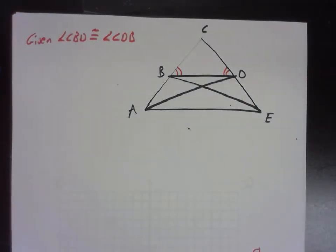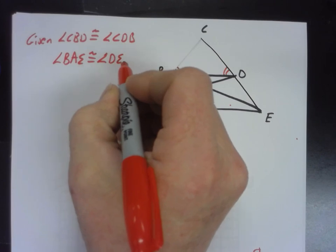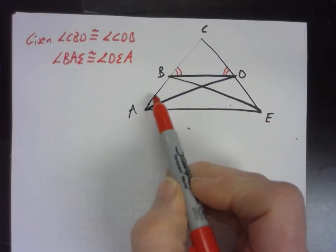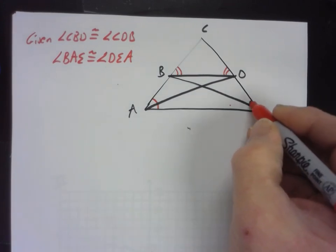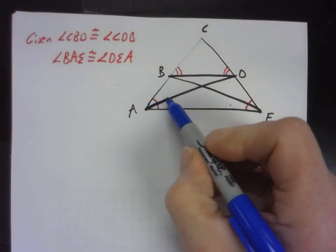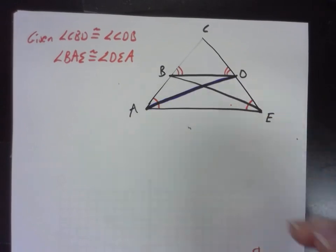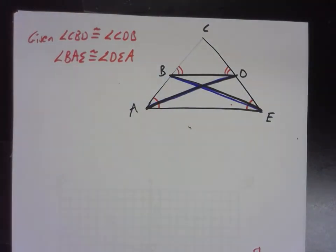And then angle BAE is congruent to angle DEA. So let's find them. BAE. So that's this whole angle here. Not one of the individual ones, but the whole thing. And then this whole angle over here. And then what we're supposed to prove is that AD, segment AD, that's this one here in blue. And I'm going to make kind of bluish. Is congruent to this one, which I'm going to make kind of bluish. Okay. So let's think about those two. Are they corresponding parts of congruent triangles? What's that? It appears they are. Agreed? Okay. Which triangles?